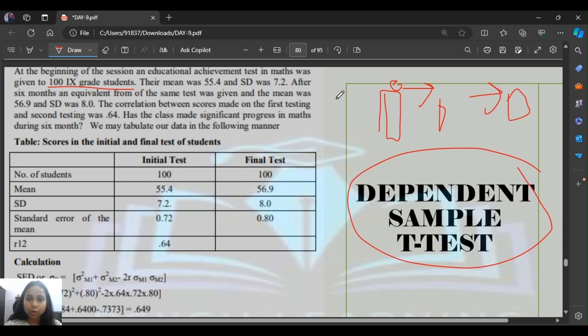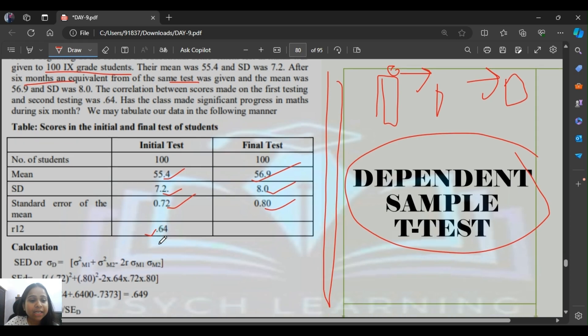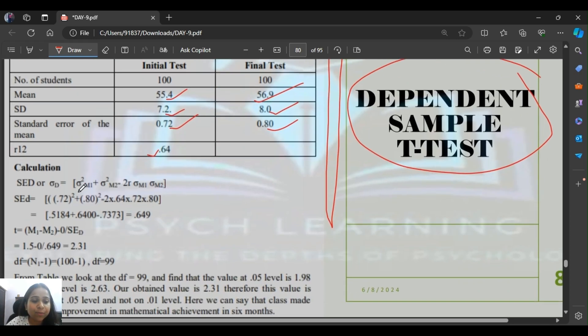Look at this question. At the beginning of the session, an educational achievement test in math was given to 100 eleventh grade students. You can see the scores. They've given the mean in the question because 100 children is very difficult to show. Mean is 55.4 and standard deviation is 7.2. After 6 months of study and learning, they took the test again. Mean is 56.9 and standard deviation is 8.0.